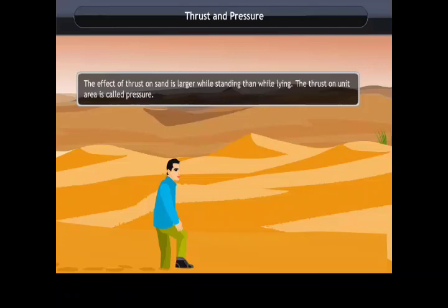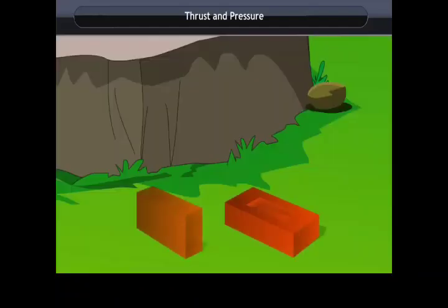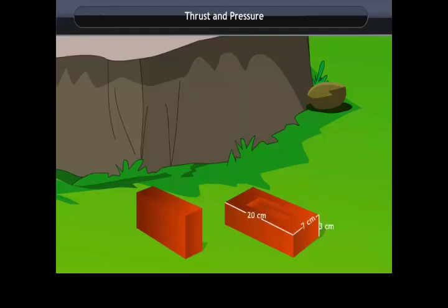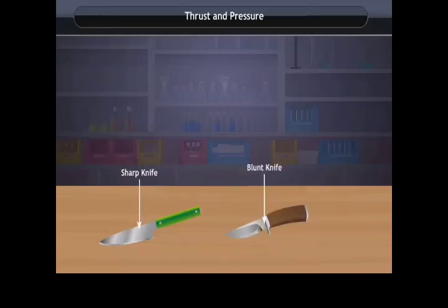Two similar bricks lying and standing exert the same force (same weight) on the ground, but different pressures because their contact areas differ. The lying brick has a large contact area, so pressure is less; the standing brick has a small contact area, so pressure is more.